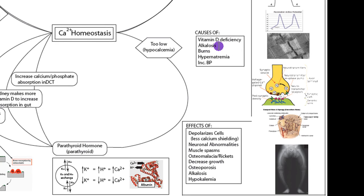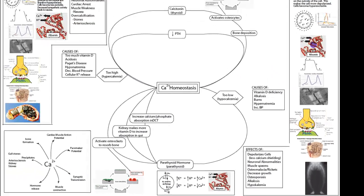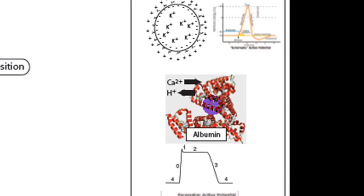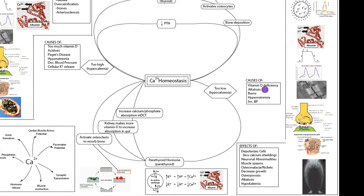Alkalosis can also cause hypocalcemia. Albumin is a large protein made by the liver that circulates in the blood. It has lots of negative charges that need to be balanced by positive ions like calcium and hydrogen. If the body is alkalotic, there's less hydrogen to balance these negative charges, so albumin binds up more calcium. This loss of free calcium then causes hypocalcemia.